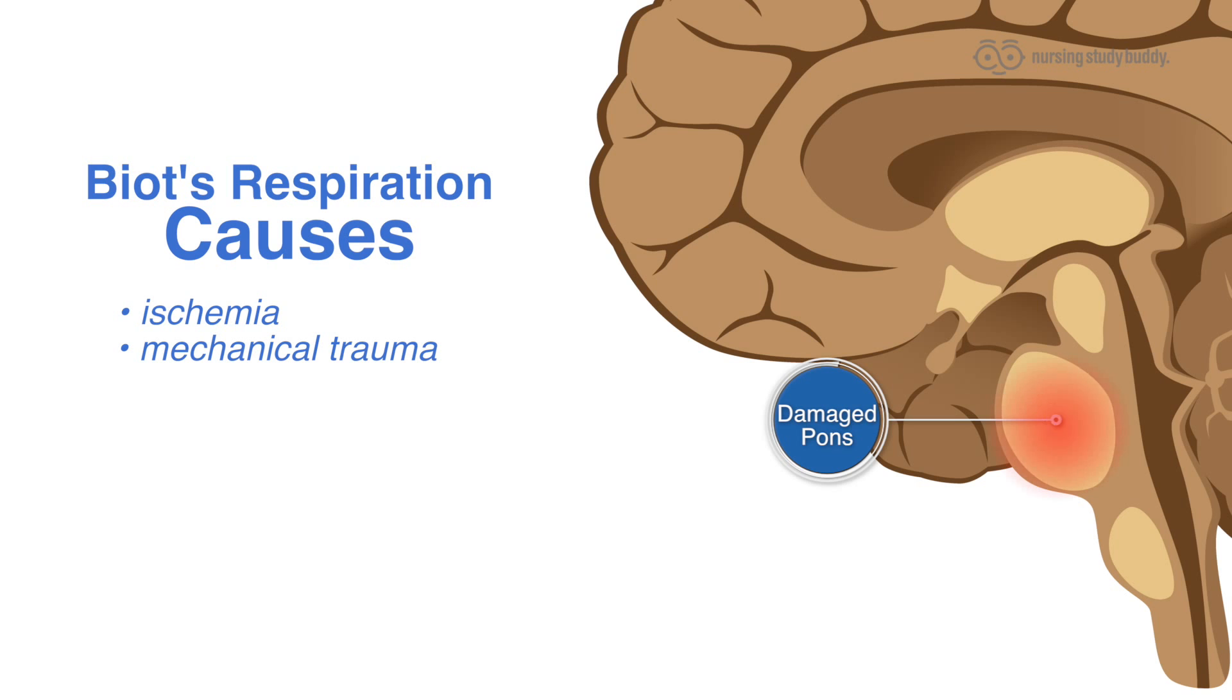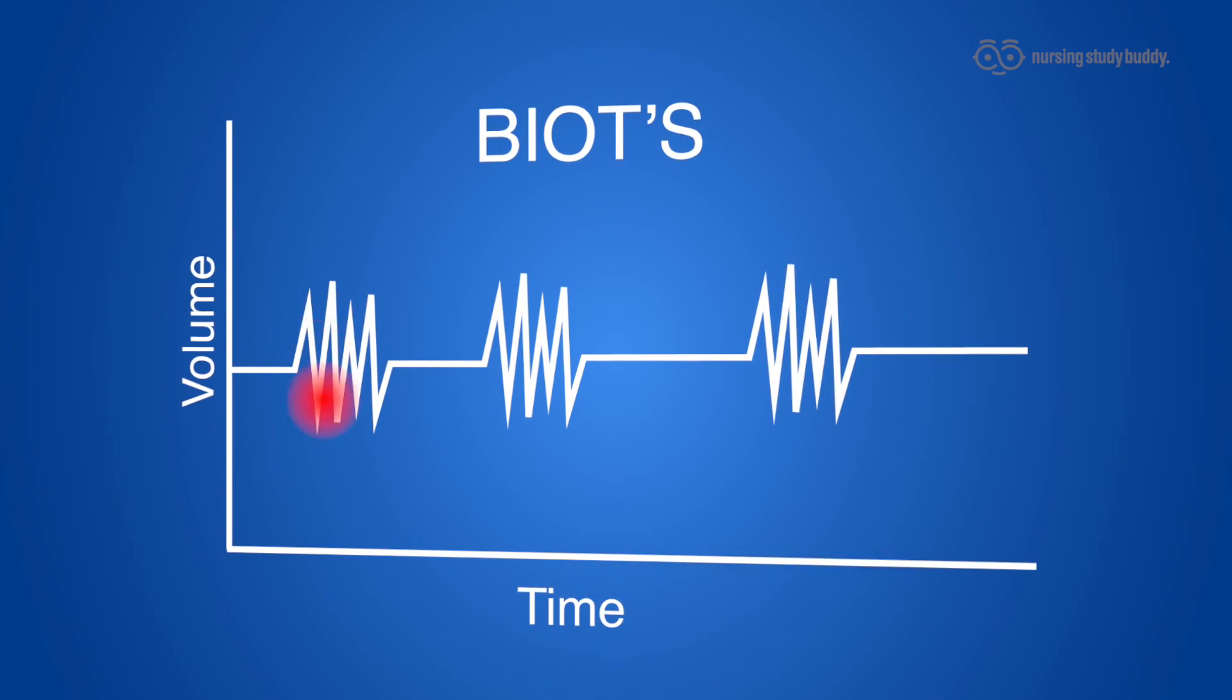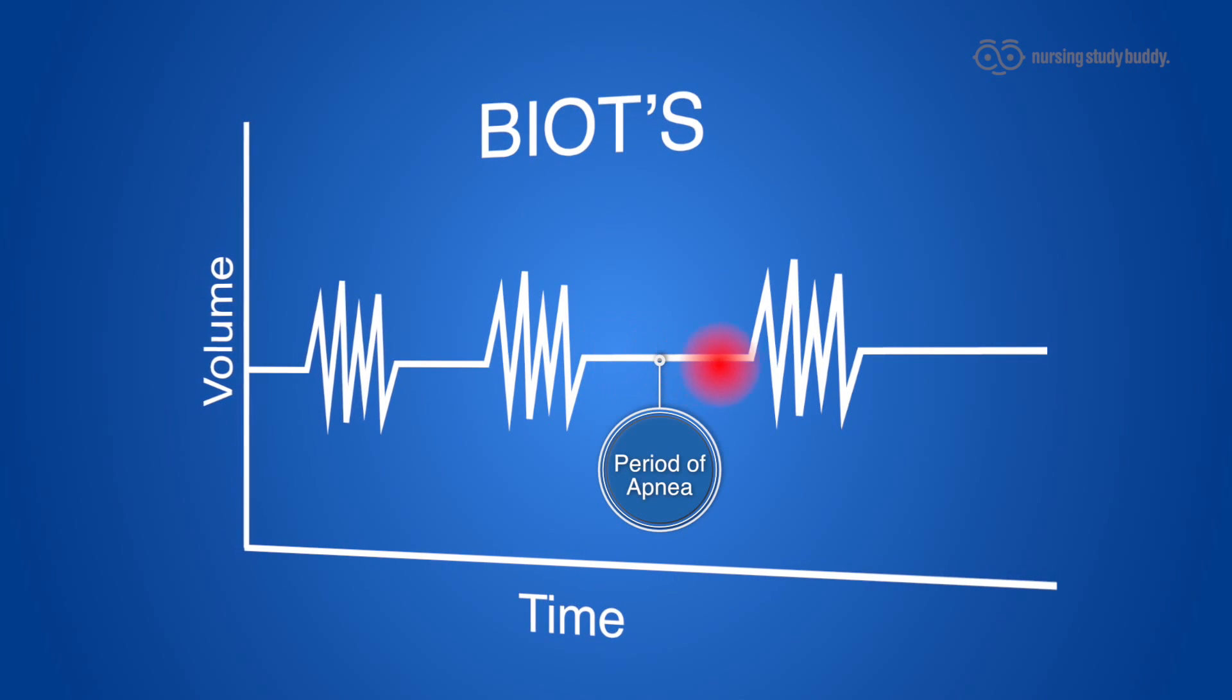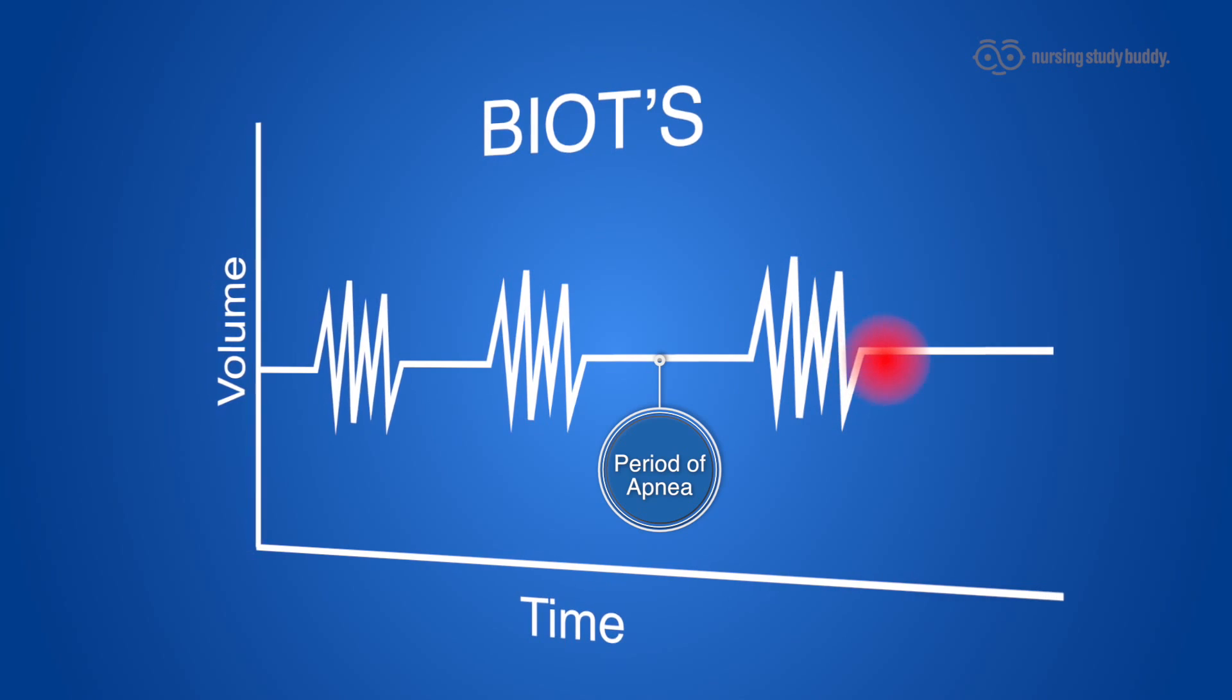You'll often see these types of respirations mostly in patients with direct trauma or a CVA or stroke. The damage to the area causes the body to have these weird groupings of quick, shallow respirations followed by periods of apnea or not breathing.